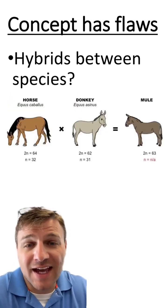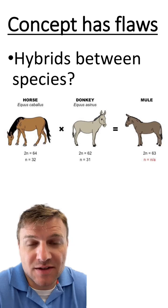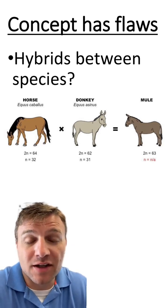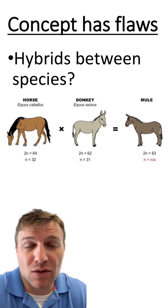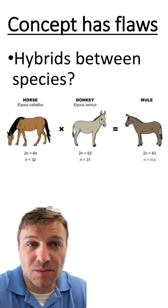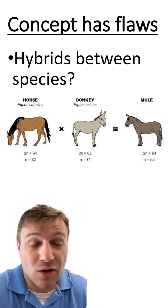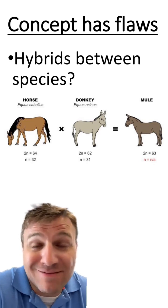And lastly, when we have hybrids between species — for instance, a horse and a donkey that produces a mule — the mule isn't fertile, but there have been very rare cases where the mule is fertile. So where does this line exist?